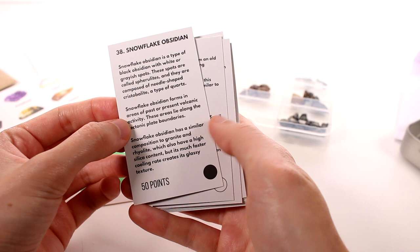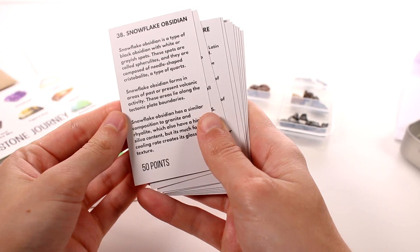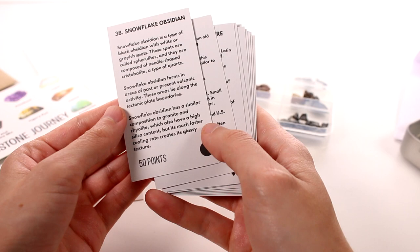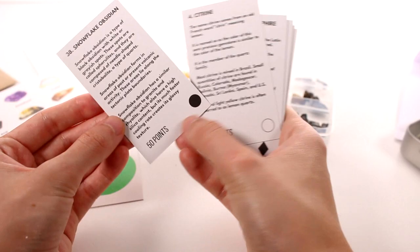Snowflake obsidian forms in areas of past or present volcanic activity. These areas lie among the tectonic plate boundaries. Snowflake obsidian has a similar composition to granite and rhyolite, which also have a high silica content, but its much faster cooling rate creates its glassy texture. This is so cool.